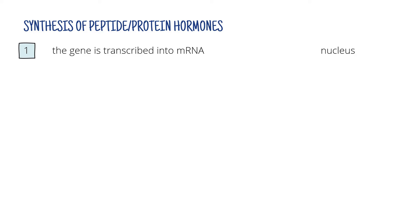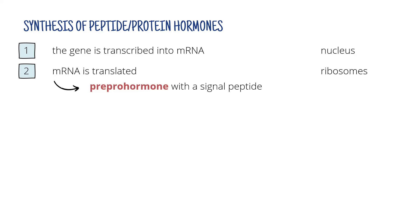This mRNA then goes to the cytoplasm where it is translated on ribosomes. Here we get the first product, the so-called preprohormone, which has a signal peptide on one of its ends.